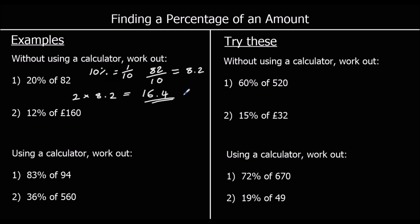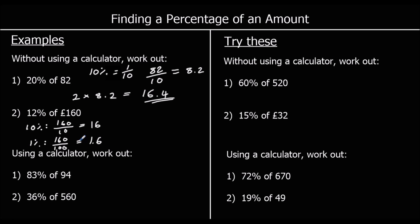Question two: find twelve percent of one hundred and sixty. Ten percent: one hundred and sixty divided by ten is sixteen. One percent: dividing by one hundred gives one point six. We want twelve percent, which is ten percent plus two percent: two times one point six is three point two. So sixteen plus three point two is nineteen point two. Since it's money, that's nineteen pounds and twenty pence.